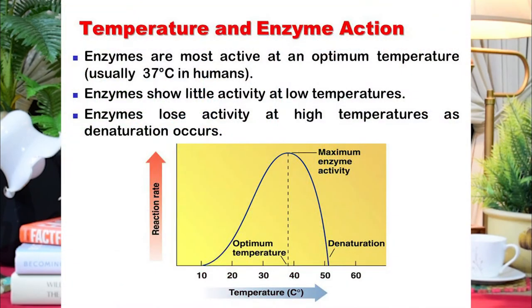The fourth factor is pH. Enzymes work at a proper, ideal optimum pH. If the pH deviates from this optimum, enzyme activity is affected.